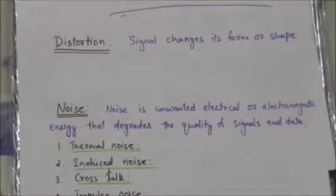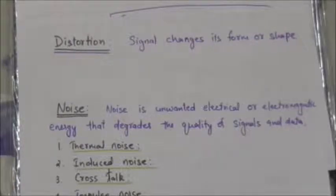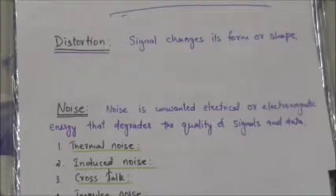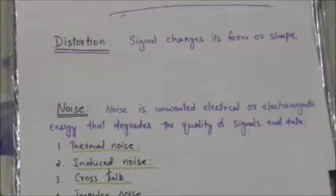Distortion can occur in a composite signal made of different frequencies. In a composite signal, each signal component has its own propagation speed through a medium, and therefore each component has its own delay in arriving at the final destination.